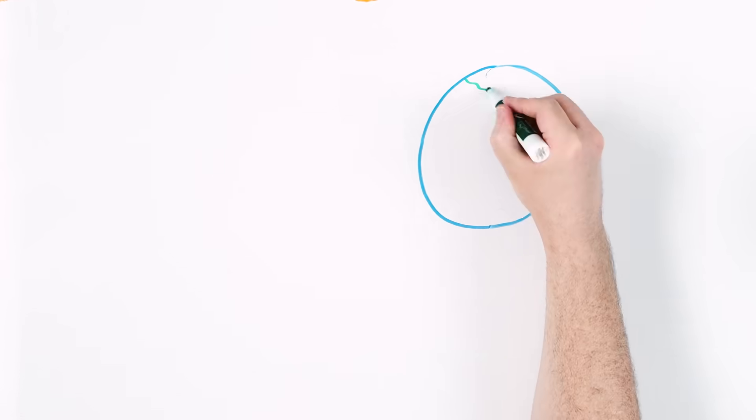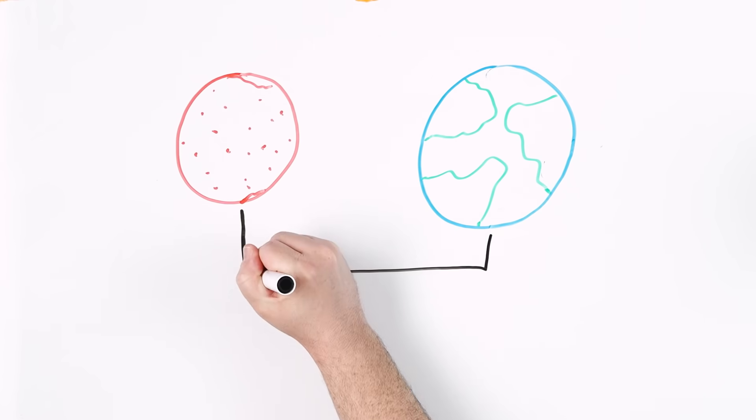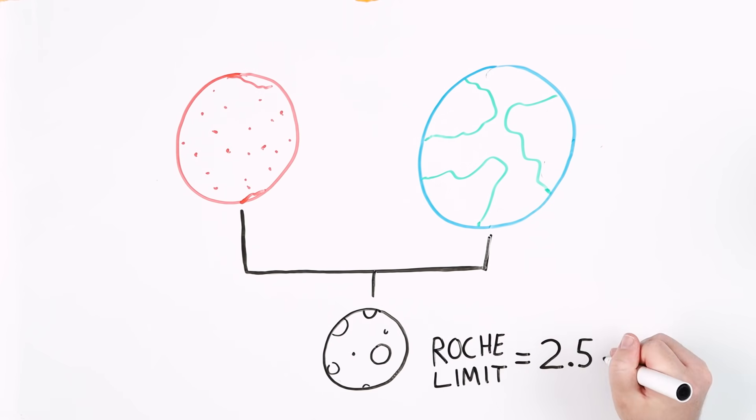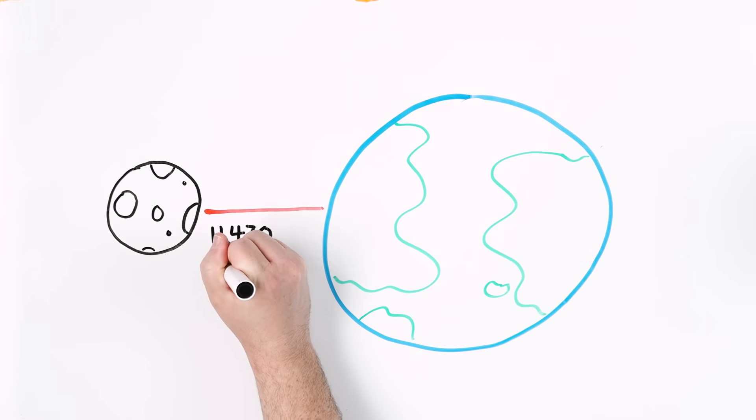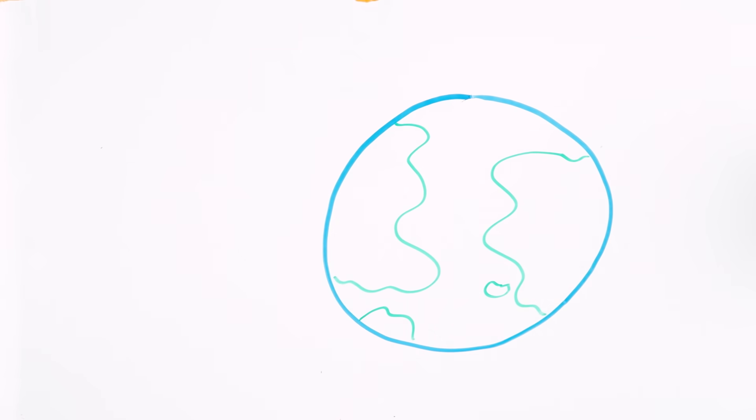And when a satellite has the same makeup as a primary body, i.e., when the moon baby is descended from its parent planet, the Roche limit is about two and a half times the radius of the larger body. This means that if the moon's orbit reached 11,470 miles from Earth's surface, tidal forces would tear that little rascal apart, turning it into a ring of debris.